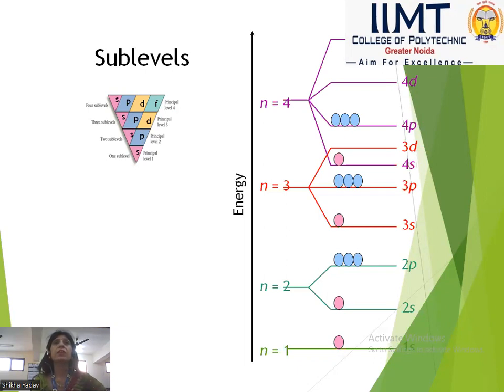For n=4: 4s has 1 orbital, 4p has 3 orbitals, 4d has 5 orbitals, and as you can see in this diagram, 3d also has 5 orbitals.